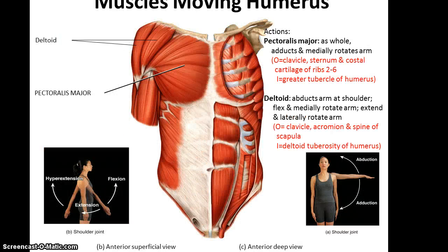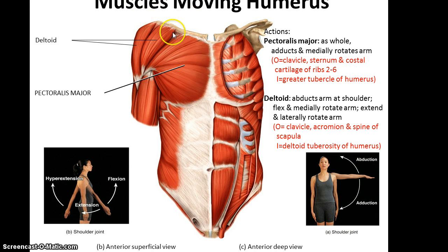Next, muscles moving the humerus. These include the deltoid muscle up at the shoulder area. It abducts the arm at the shoulder, and it can flex and medially rotate the arm, and it can even extend and laterally rotate the arm. Its origin is the clavicle and the acromion and spine of the scapula, and its insertion is the deltoid tuberosity of the humerus.